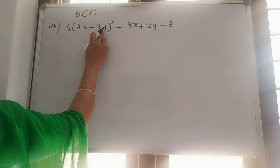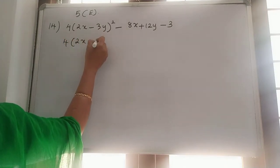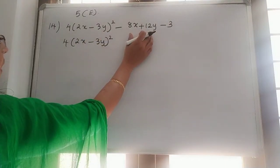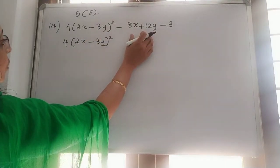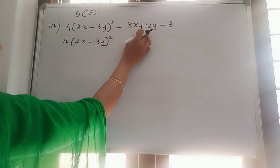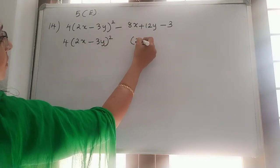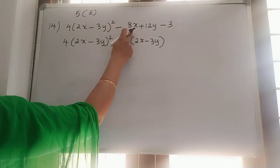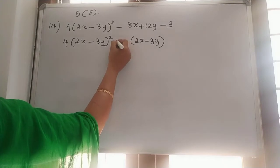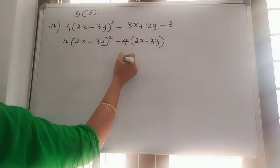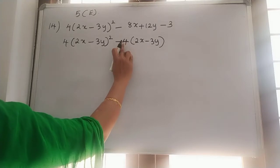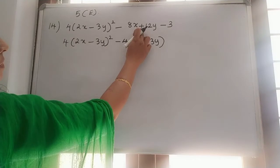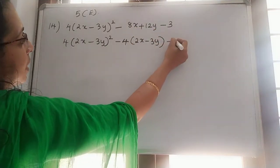So we have 2x minus 3y. Depending upon the same thing, we have to take here. If we write 2x minus 3y, which one will be outside? We want to get it as negative 8x. So it will be minus 4. Then only we will get minus 4 into 2 as minus 8x. Minus into minus plus 4 into 3 is 12y. Minus 3.